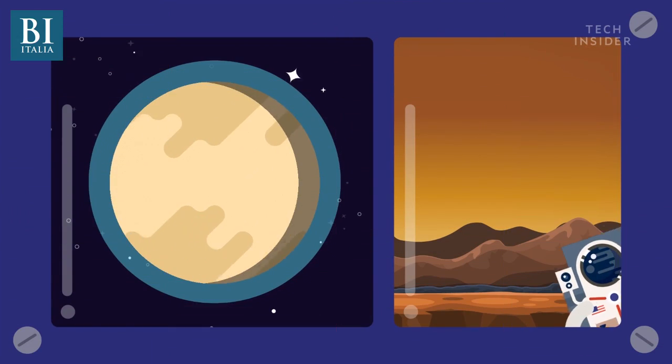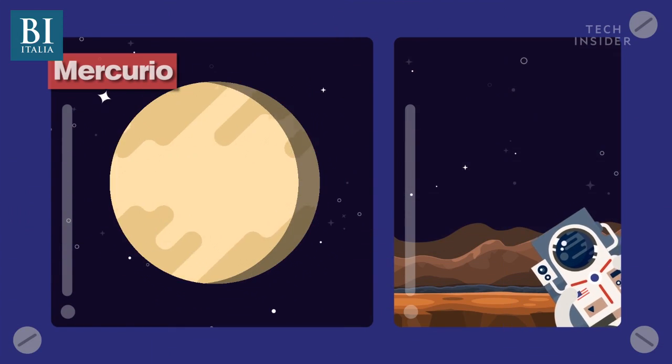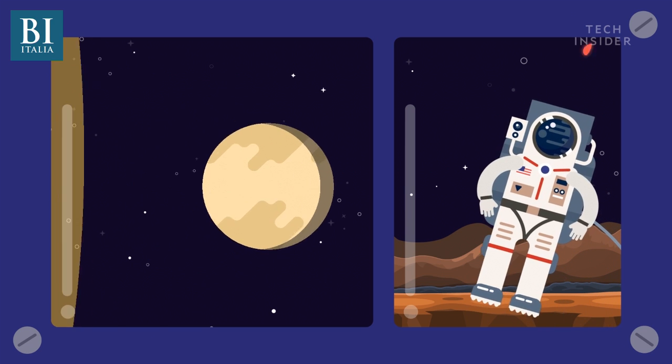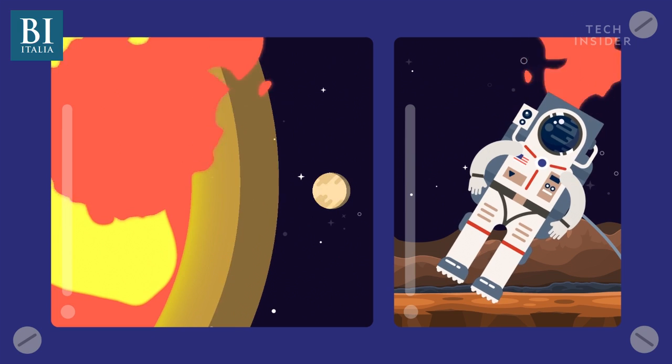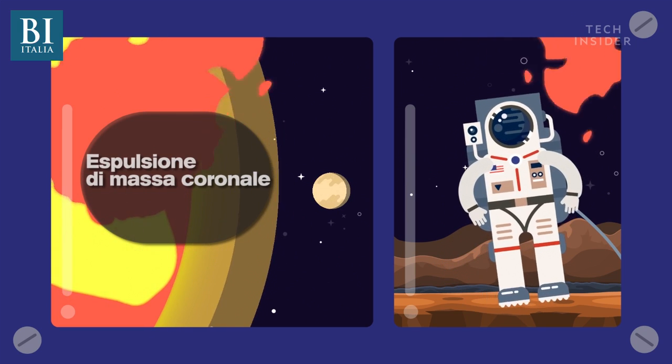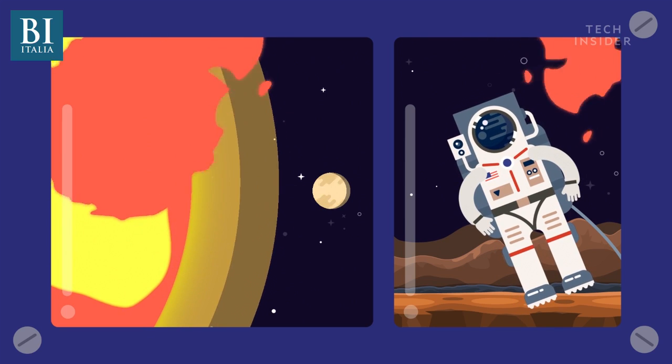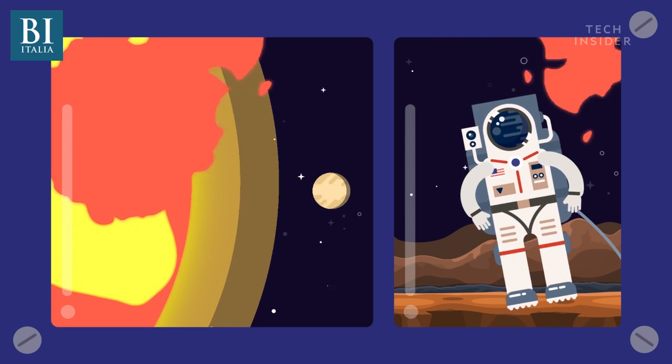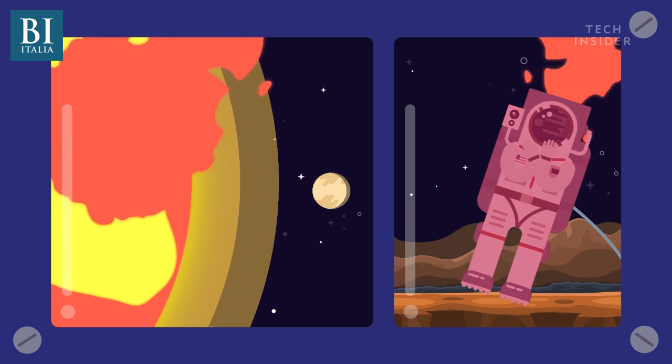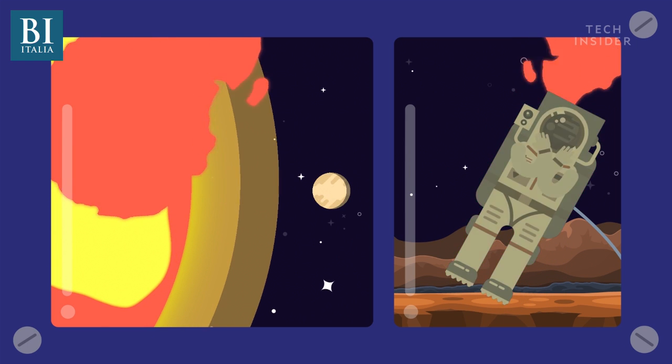Mercury has little to no atmosphere, and therefore, no real weather to speak of. But you would feel the full brunt from the most powerful storms in our solar system, called coronal mass ejections. These explosive storms form on the sun and bathe Mercury's surface in high-energy radiation. So if the lack of oxygen and extreme temperatures don't kill you, the radiation certainly will.